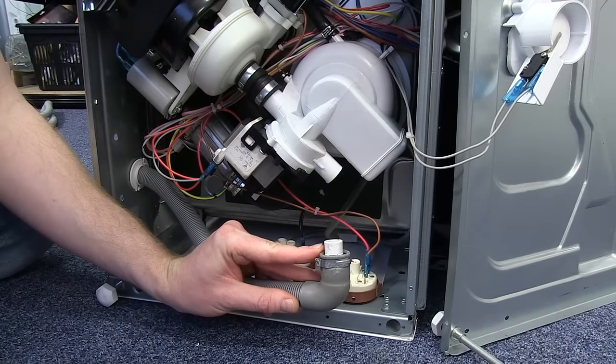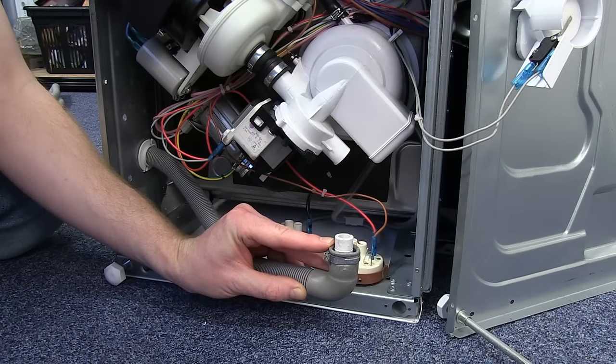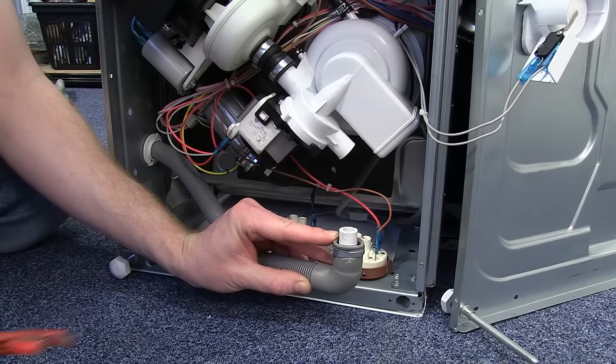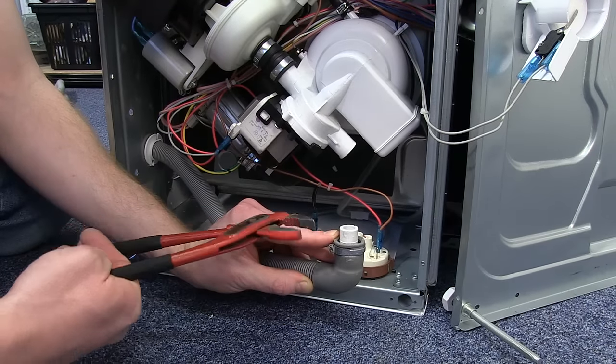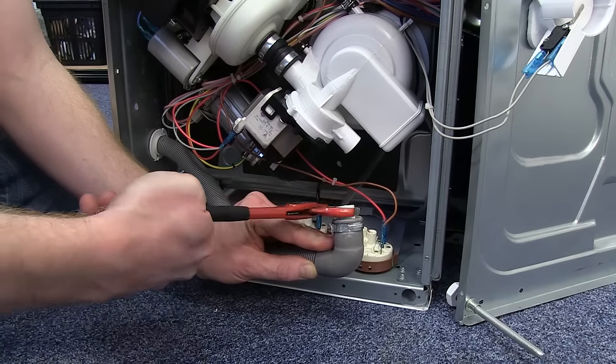Here we can see a non-return valve that's also come out with the drain hose. This is designed to stop water re-entering the machine, so grab your pump pliers again and gently maneuver that out of the hose and return to the drain pump.